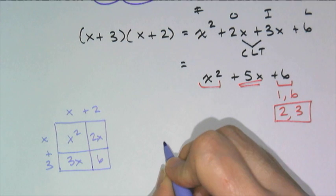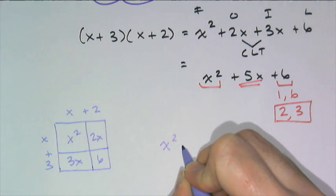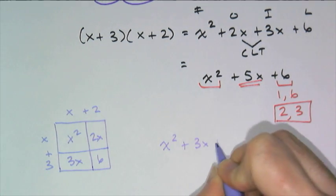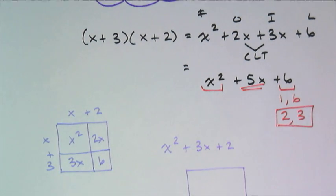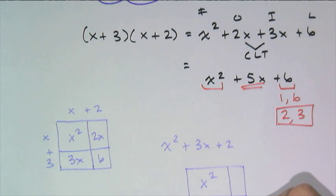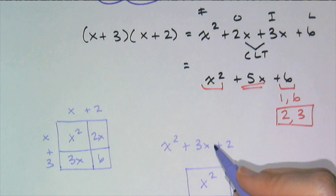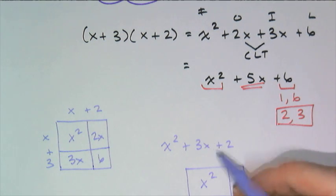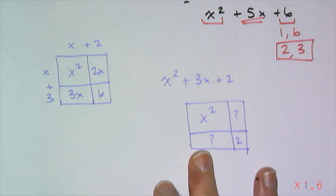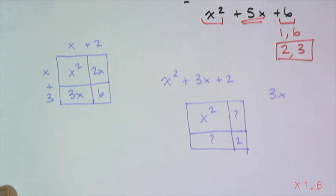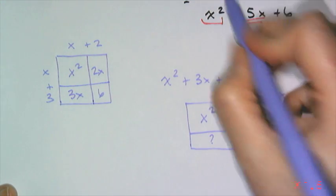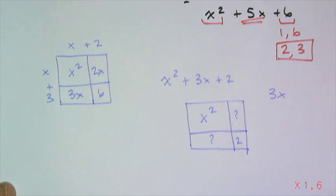If I give you something else to factor, like x squared plus 3x plus 2, I can build my little rectangle and populate it in this corner with my x squared and that with my 2. And then I just have to figure out what went there and what went there to give me plus 3x. And then I just need to think about, well, how do I split up 3x? Because remember, 3x is generated from combining two terms.